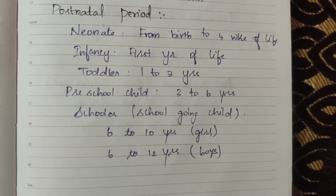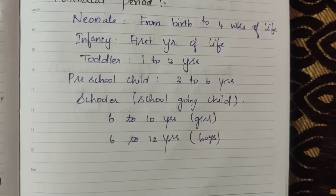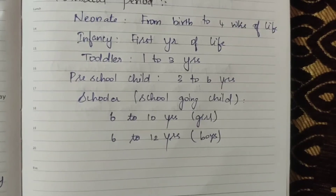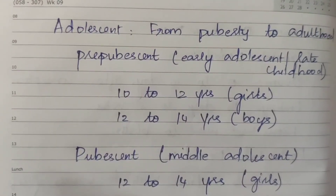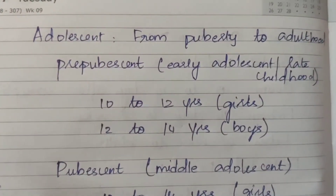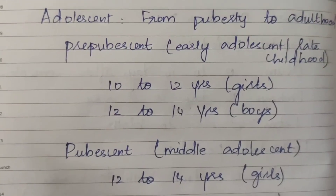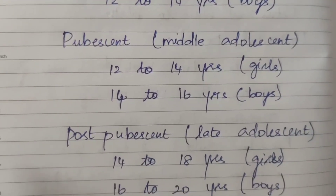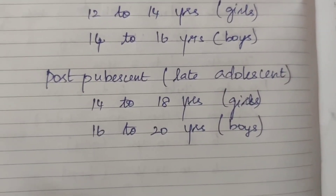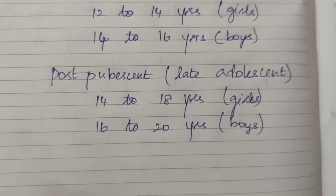Toddler: 1 to 3 years. Preschool: 3 to 6 years. School-going child: girls 6 to 10 years, boys 6 to 12 years. Adolescent: from puberty to adulthood. This includes three types — Prepubescent or early adolescent or late childhood: 10 to 12 years for girls, 12 to 14 years for boys. Pubescent or middle adolescent: 12 to 14 years for girls, 14 to 16 years for boys. Post-pubescent or late adolescent: 14 to 18 years for girls, 16 to 20 years for boys.